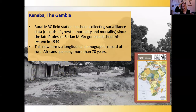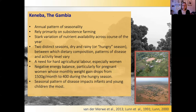This research group is based in a village called Keneba in the West Kiang district of the Gambia — a rural MRC field station that has been collecting surveillance data since the late Professor Sitian McGregor established this system in 1949. It now forms a longitudinal demographic record of rural Africans spanning more than 70 years, one of the largest of its kind in the world.